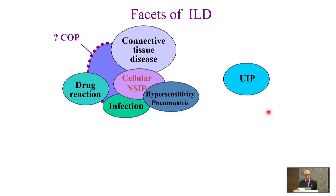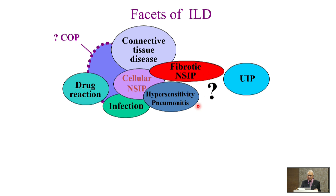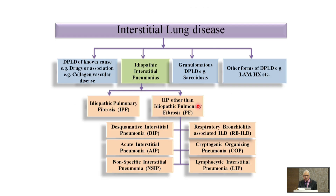As I said in the beginning, ILD was equated to idiopathic pulmonary fibrosis. Murray and Nadal show UIP at the center, with connective tissue disease, drug reaction, infection, cellular NSIP, hypersensitivity pneumonitis, and fibrotic NSIP around it. We are all concerned about fibrotic NSIP — how do we treat it? That is what we are going to discuss.